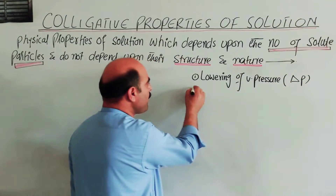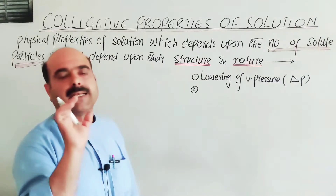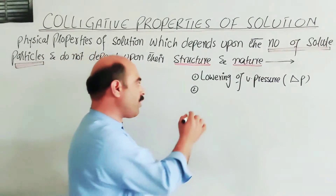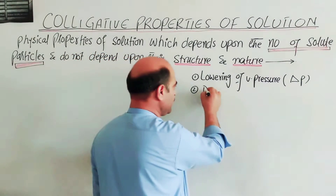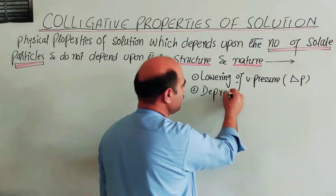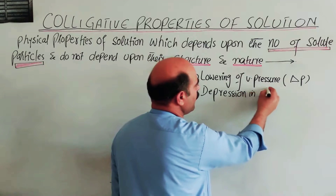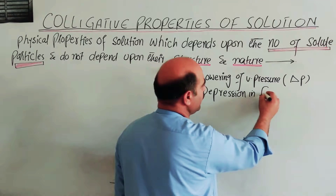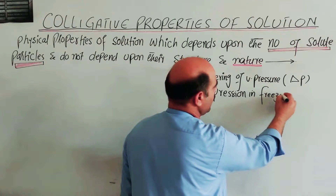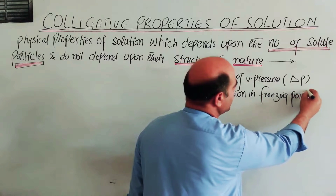The vapor pressure decreases — this is called lowering of vapor pressure, delta P. Another colligative property is depression in freezing point — the freezing point of the solution decreases.